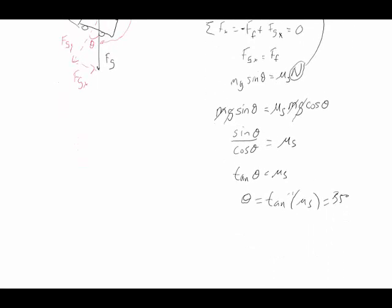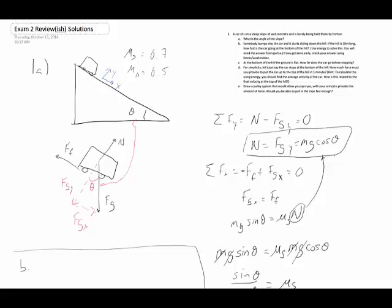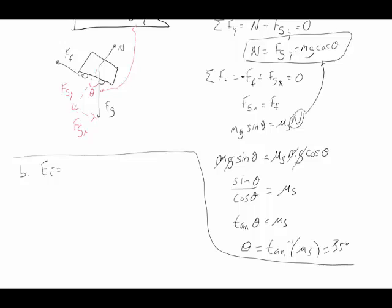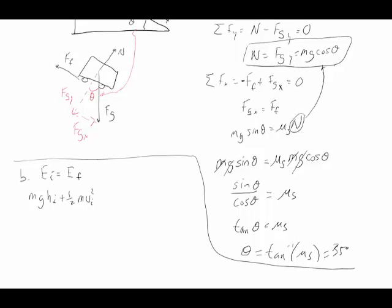That's part one. For part B, somebody bumps the car and it starts sliding down the hill, which is 30 meters long. We want to find how fast the car is going at the bottom, and we're asked to use energy. Energy initial equals energy final: mgh_initial plus one-half mv_initial squared plus work_non-conserved equals mgh_final plus one-half mv_final squared.